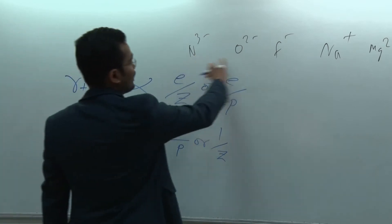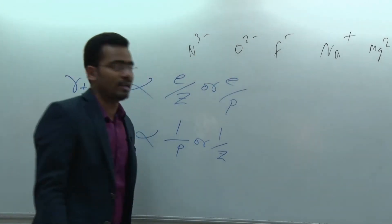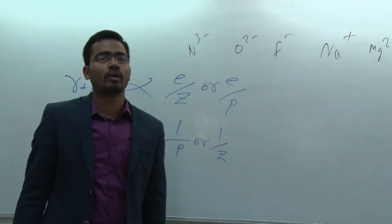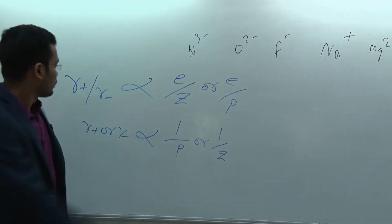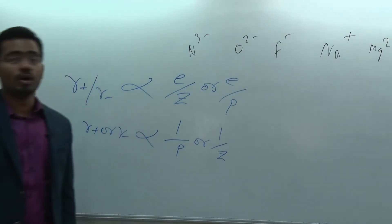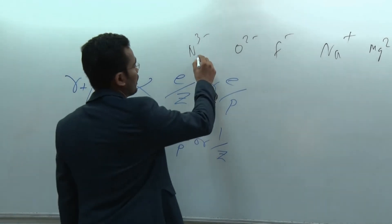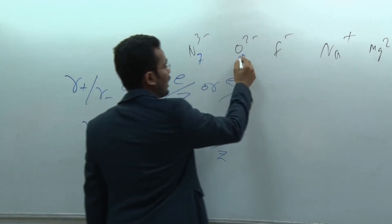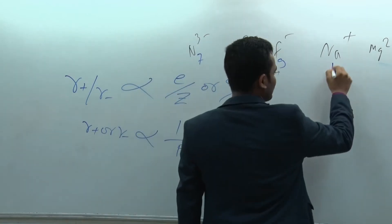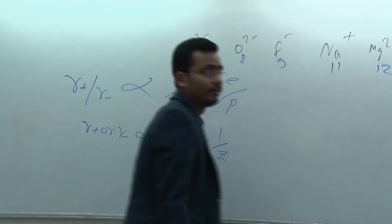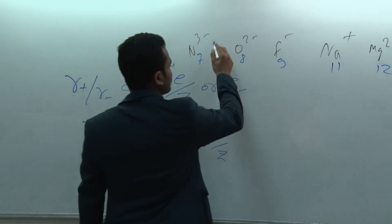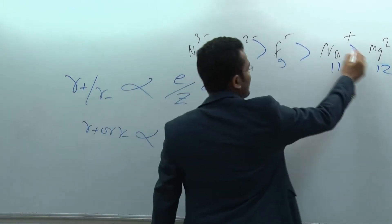For example, N³⁻, O²⁻, F⁻, Na⁺, and Mg²⁺ are all isoelectronic species. For isoelectronic species, r-cationic or r-anionic is inversely proportional to atomic number. Their atomic numbers are 7, 8, 9, 11, and 12 respectively, so the order of cationic or anionic radius is inversely proportional to atomic number.